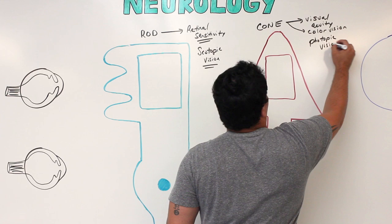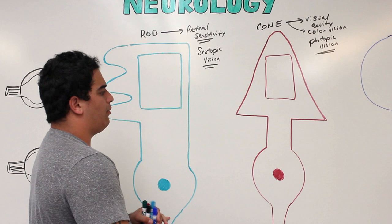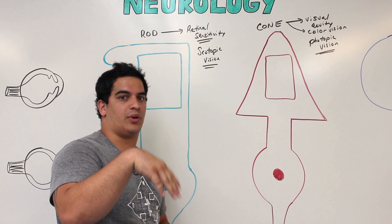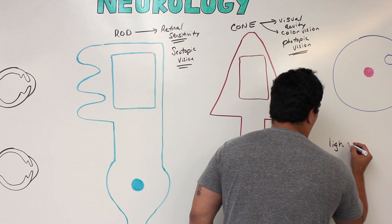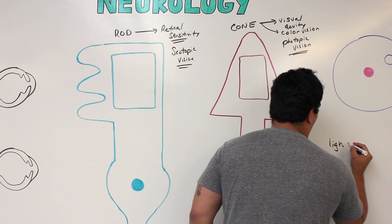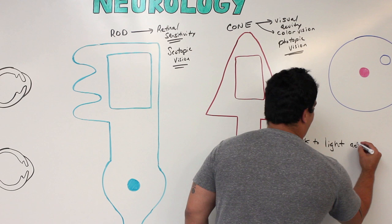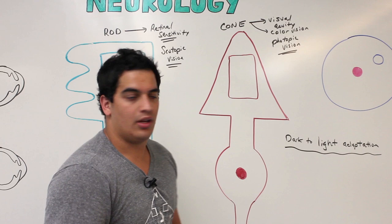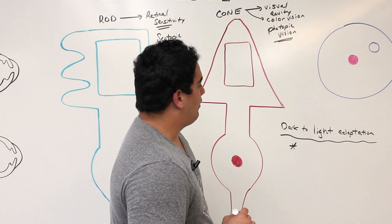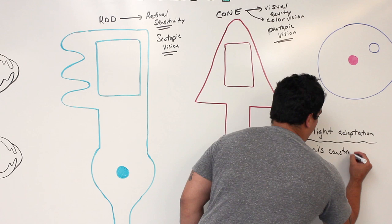Now let's do the example we started with. Let's say you were in a movie theater — really, really dark — you just watched the new Spider-Man movie, and you come out and get hit with a beam of light. This is called dark-to-light adaptation. The first thing you should notice right away in any individual whenever going from a dark room into a light room is that the pupils constrict.